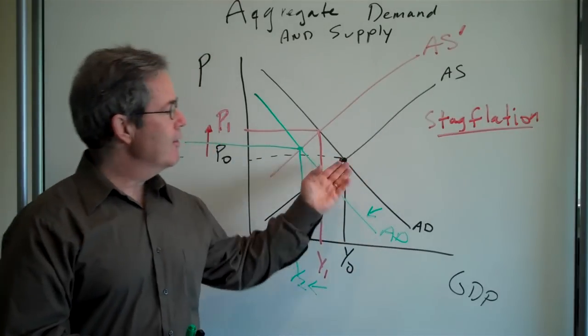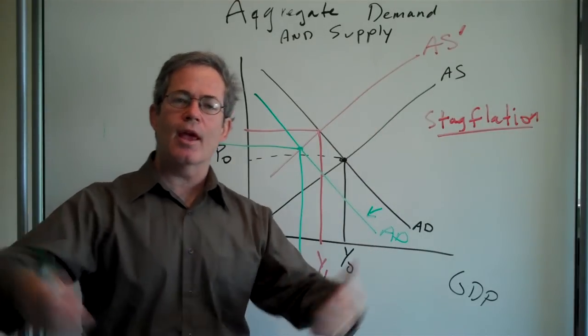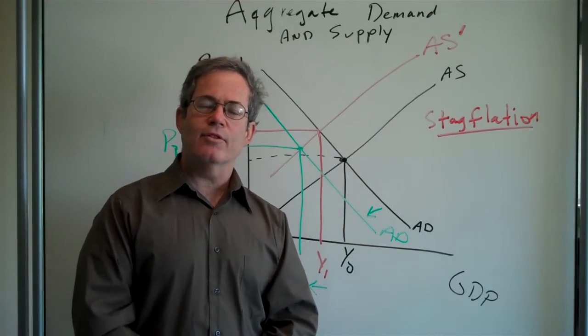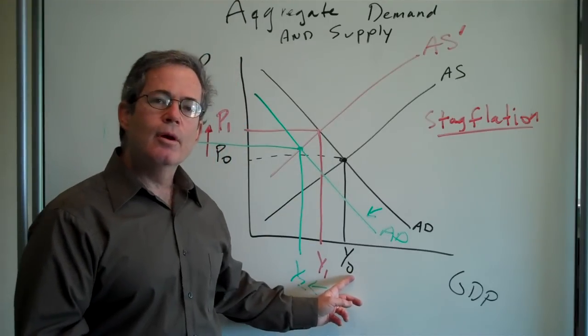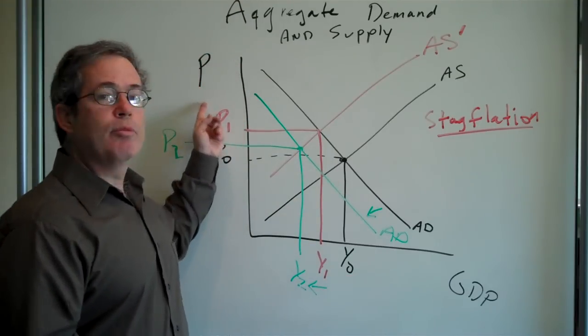the government could expand aggregate demand. Try this at home. You'll see that they could expand aggregate demand, engage in lower taxes or higher government spending. That will raise output, but at the cost of raising prices further.